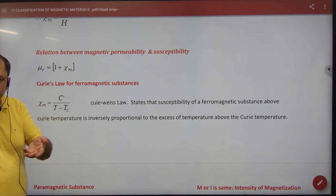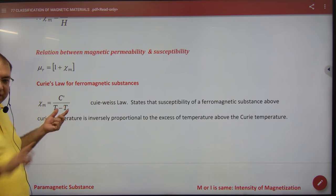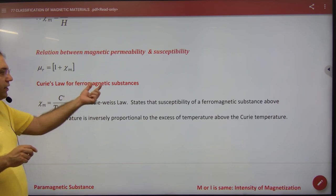If you want it to be ferro, then your temperature must be greater than critical. So that's why you have to take net temperature T minus Tc. So what is the material? Ferro.